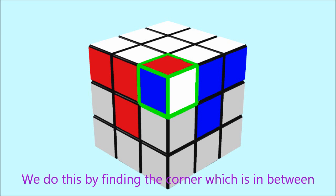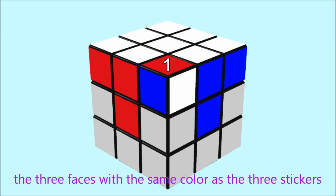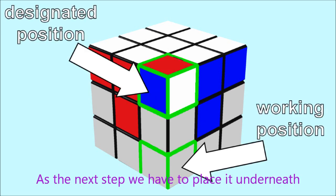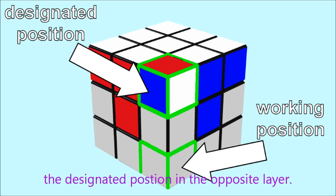We do this by finding the corner which is in between the three faces with the same color as the three stickers on our corner piece. As the next step, we have to place it underneath the designated position in the opposite layer.